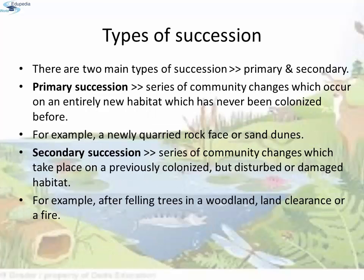There are two main types of succession: primary and secondary. Primary succession is the series of community changes which occur on an entirely new habitat which has never been colonized before — for example, a newly quarried rock face or sand dunes. Secondary succession is the series of community changes which take place on a previously colonized but disturbed or damaged habitat — for example, after felling trees in a woodland, land clearance, or a fire.